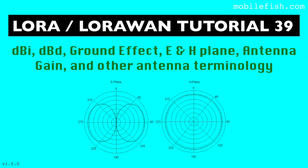In this tutorial I will again explain the difference between dBi and dBd, what an antenna E-plane and H-plane is, what the effect of ground on an antenna is, what the difference is between main, back and side lobes, what antenna gain is, what negative antenna gain is, what the relationship is between ERP, antenna gain and transmission power, how to calculate loss using an example, what unity gain is, what an antenna beam width is, what a take-off angle is, and what a front-to-back ratio is.